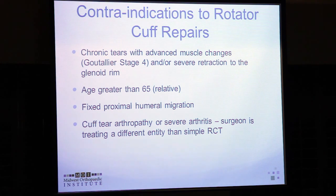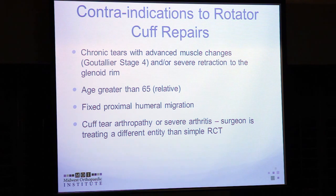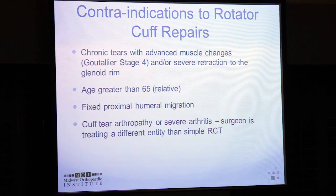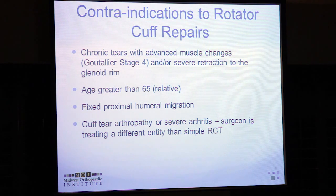Contraindications to rotator cuff repair include chronic situations with no remaining muscle — looking at the MRI and knowing that a repair won't be a viable option. Severe retraction is a relative contraindication, but if the muscle quality is good, extensive releases can usually get the tendon back. It is the atrophy that most profoundly affects outcome. Fixed proximal migration — rotator cuff arthropathy — is simply a different entity from a standard rotator cuff repair.